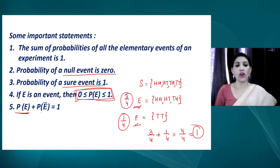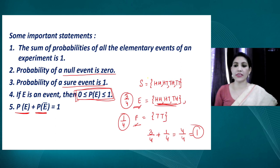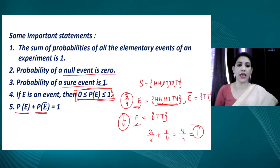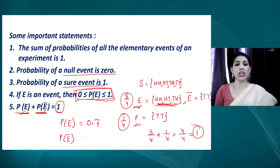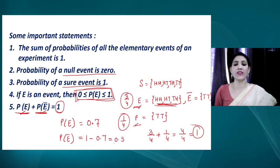The next point is about probability of an event and its complement. If event E has 3 favorable cases, then E-complement contains all cases not in E. The probabilities of E and its complement always sum to 1. For example, if probability of E is 0.7, then probability of E-complement is 1 minus 0.7, which equals 0.3.